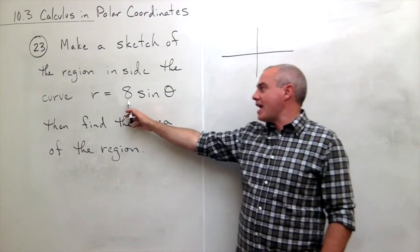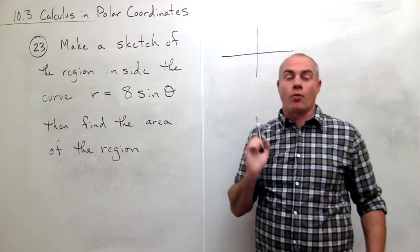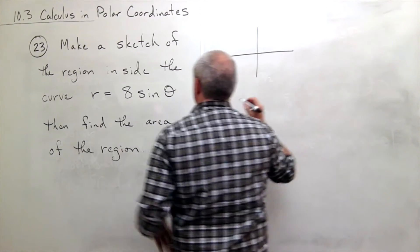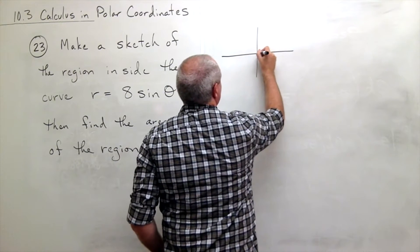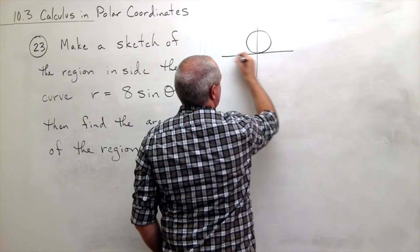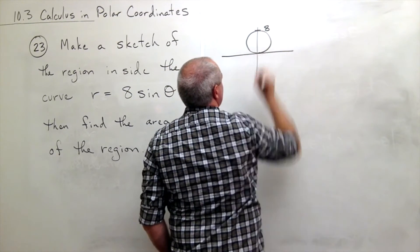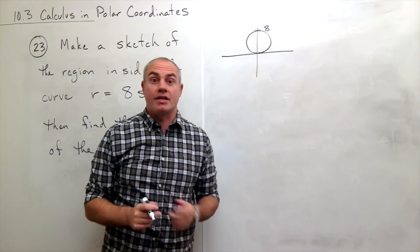What does this 8 do? It just stretches it so instead of it having diameter 1 it has diameter 8. So this is what we're looking at here when we look at r equals 8 sine of theta. We have this circle sitting on top that's tangent to the x-axis and this is up at 8. So it has diameter 8, radius 4.